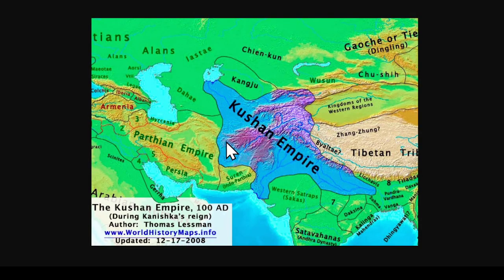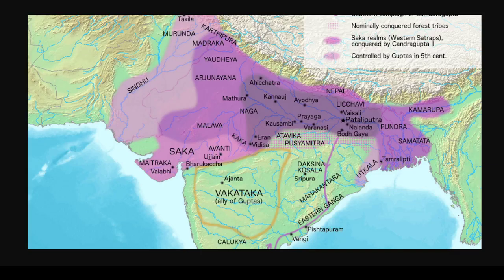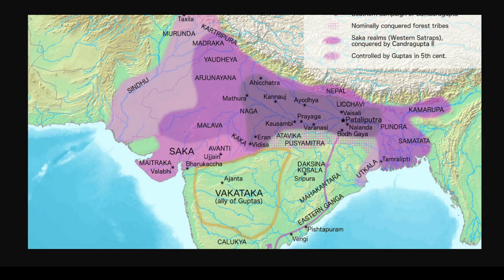Then the Kushans come in, ruling alongside the Parthians from about 30 AD to 375. We have the Satavahana dynasty, ruling alongside the Kushans — their territory in central India is why they produced all those beautiful reliefs at Sanchi depicting the life of the Buddha. Back to the Gupta Empire — you can see it's nowhere near as large as the extent of the Mauryan Empire.